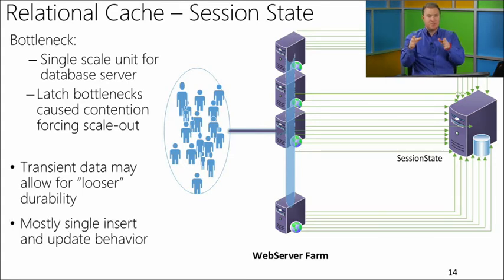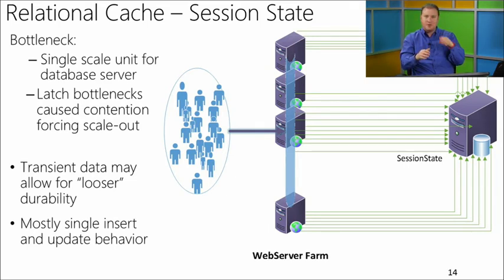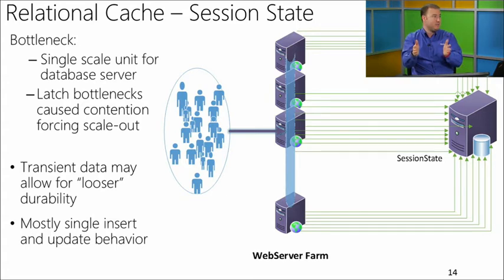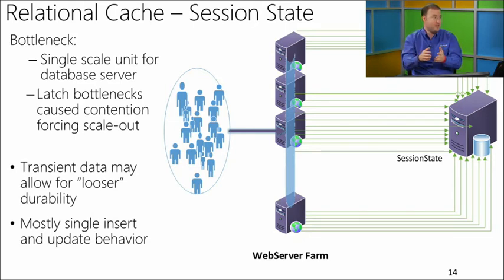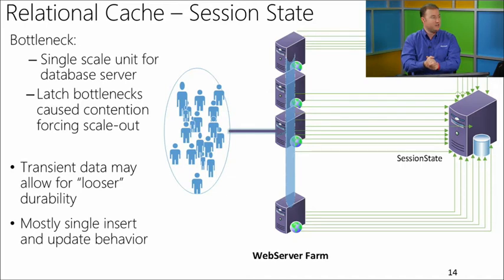A number of other customers I've worked with on four or five of these relational cache scenarios have also seen great numbers — in the 3x, 4x, 5x gains range. The behavior is very OLTP-centric: mostly singleton inserts and updates, taking advantage of hash indexing for point lookups, and being able to scale up their particular server. This scenario really let customers scale up and utilize all the hardware they needed.